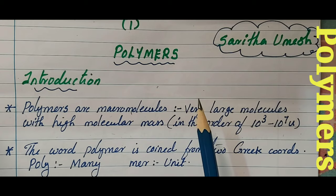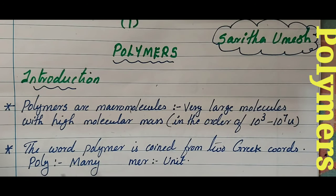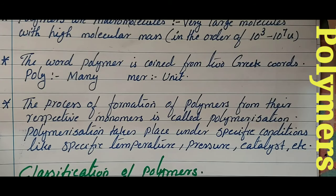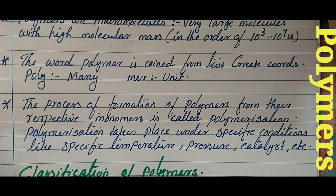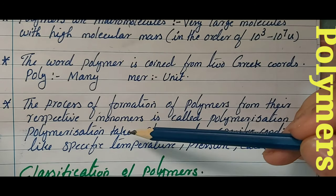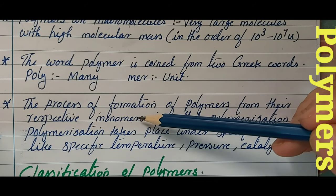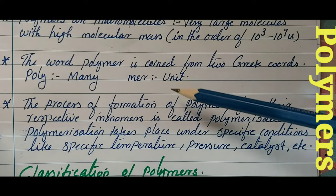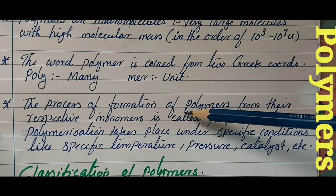The word 'polymer' is derived from two Greek words: 'poly' meaning many, and 'mer' meaning unit — so polymer means many units. To form a polymer you need a monomer. Monomers are the simplest repeating unit of a polymer, and a polymer is a collection of monomers joined together by chemical bonds.